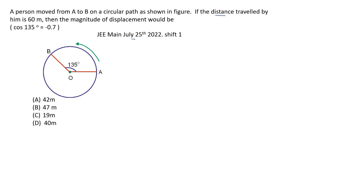This is the diagram given and four options are given. Option A, 42 meter, that is displacement. Option B, 47 meter. Option C, 19 meter. Option D, 40 meter. So, only magnitude is asked, magnitude of displacement.